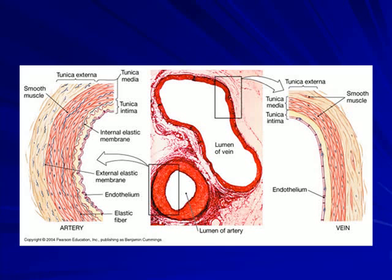You should be able to identify the different layers of blood vessels and differentiate between a vein and an artery. You should identify each layer of the artery, particularly this muscular artery which has smooth muscle in the tunica media. The tunica intima is the innermost layer, and the outermost layer is the tunica externa.